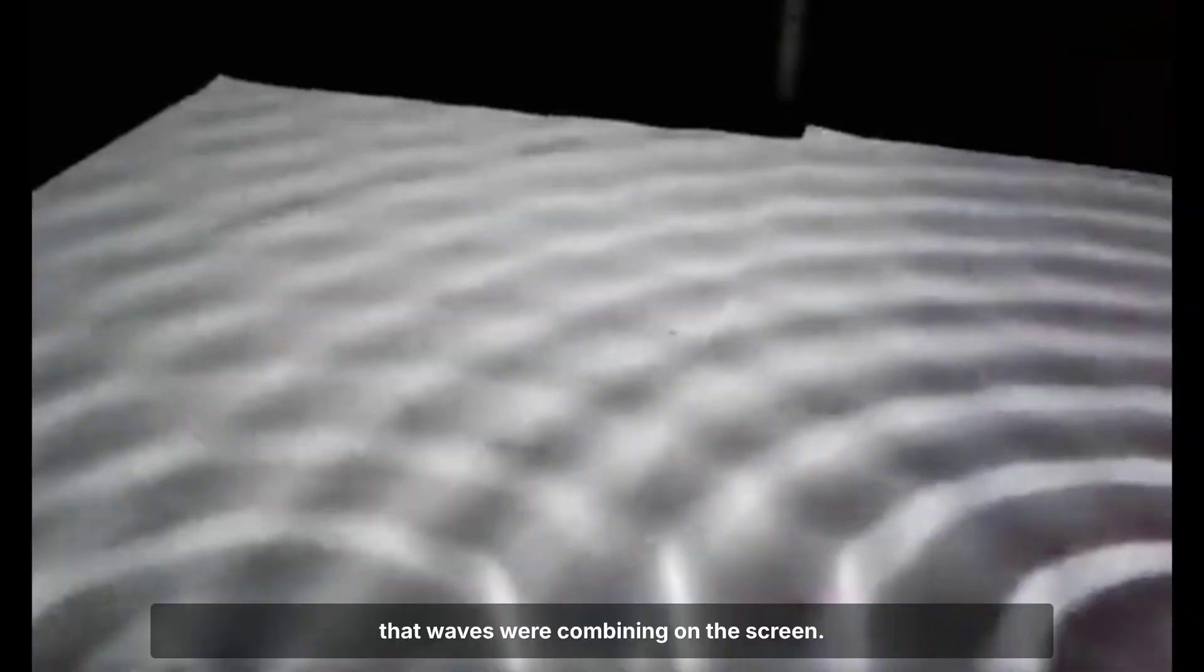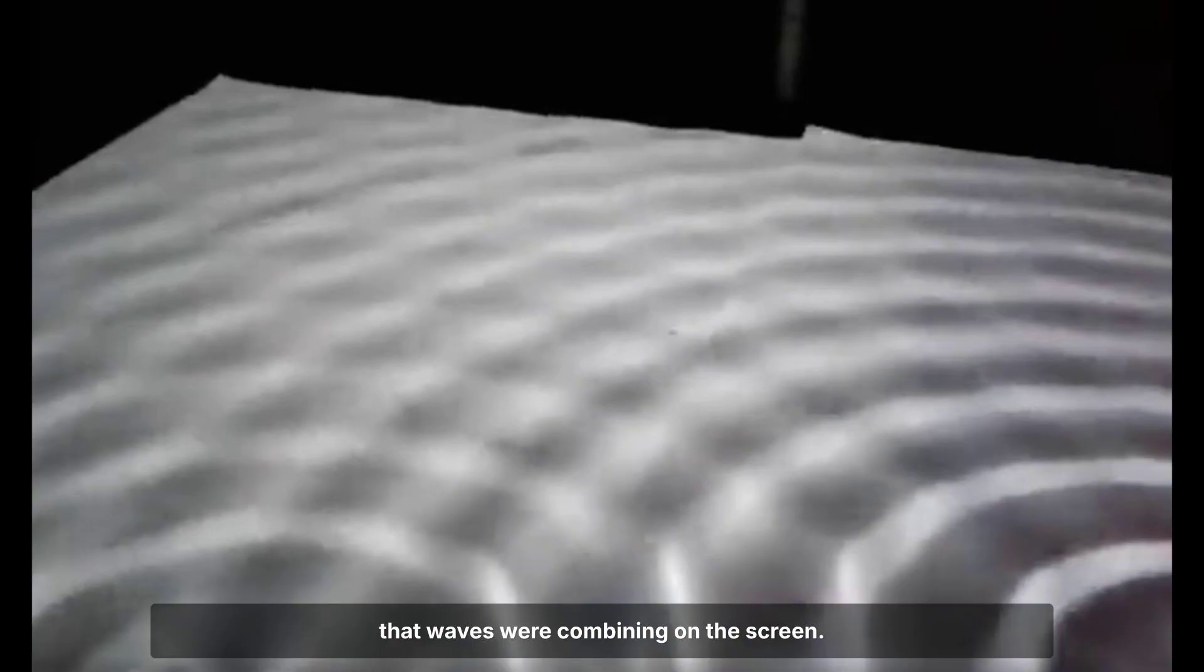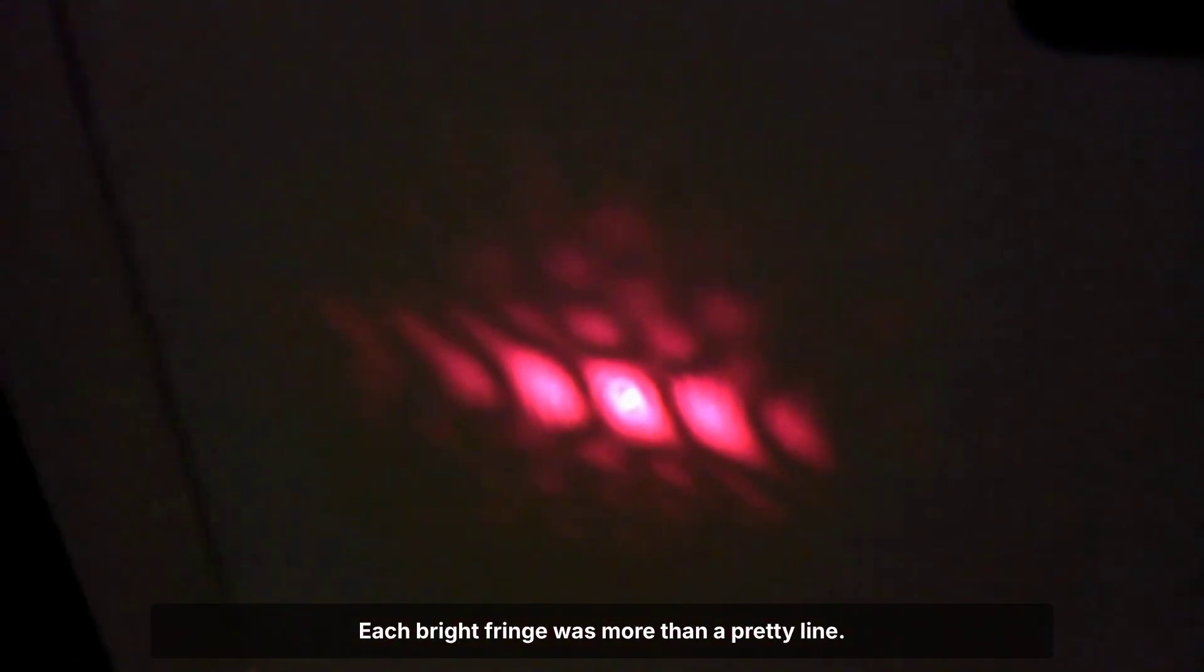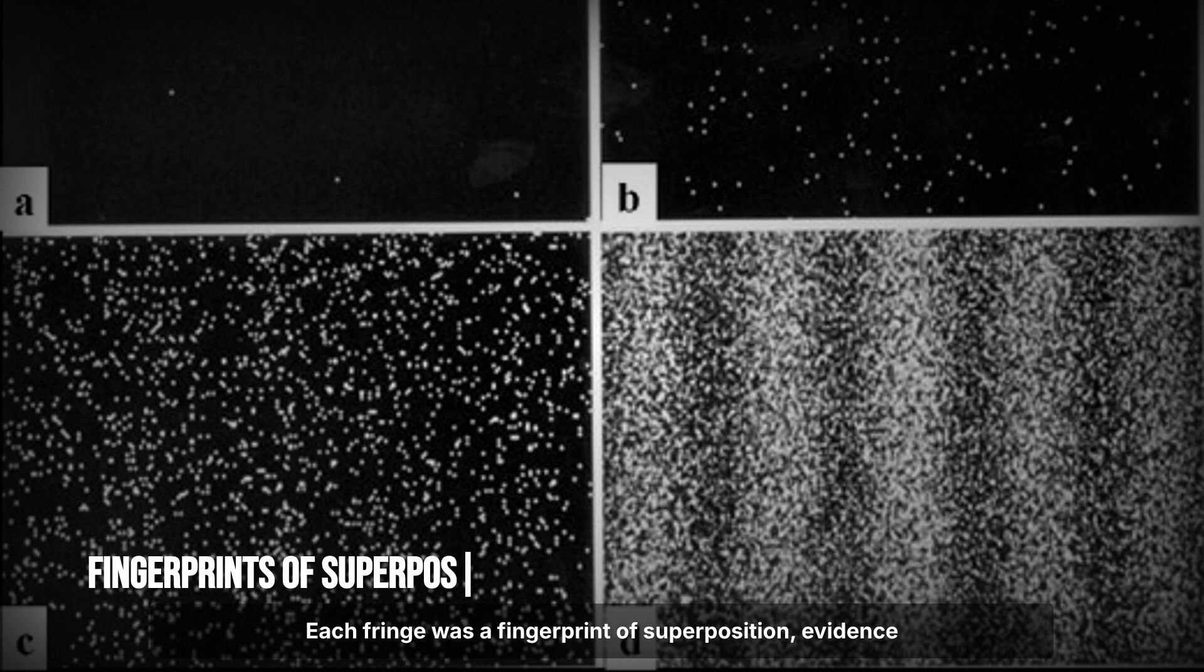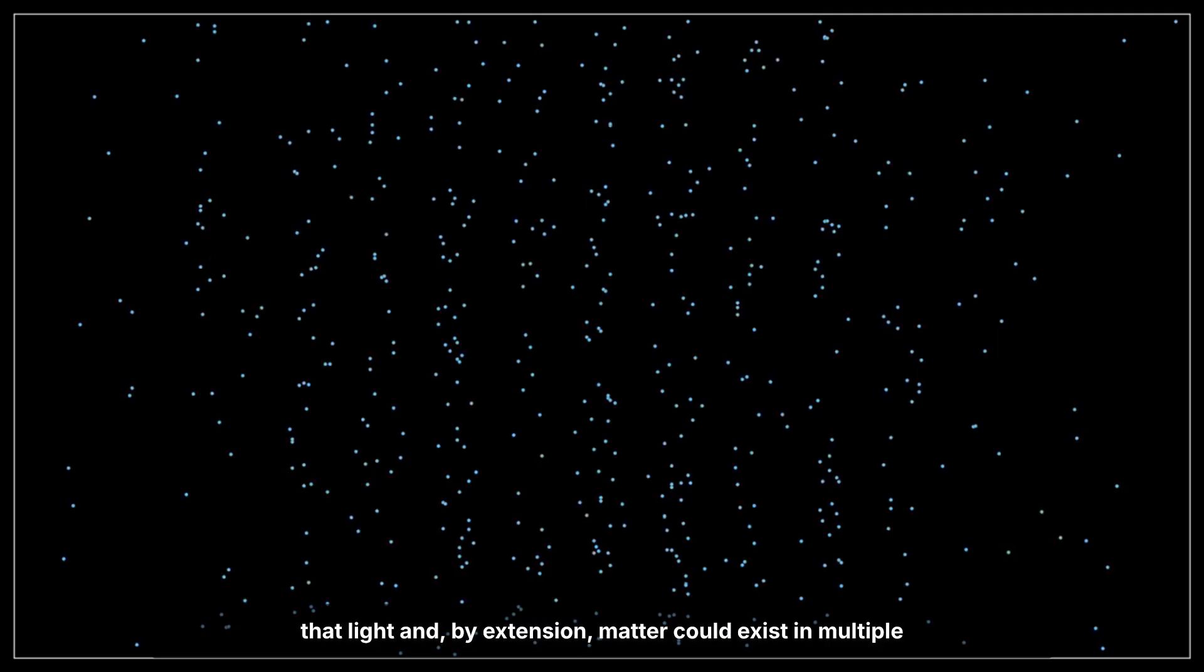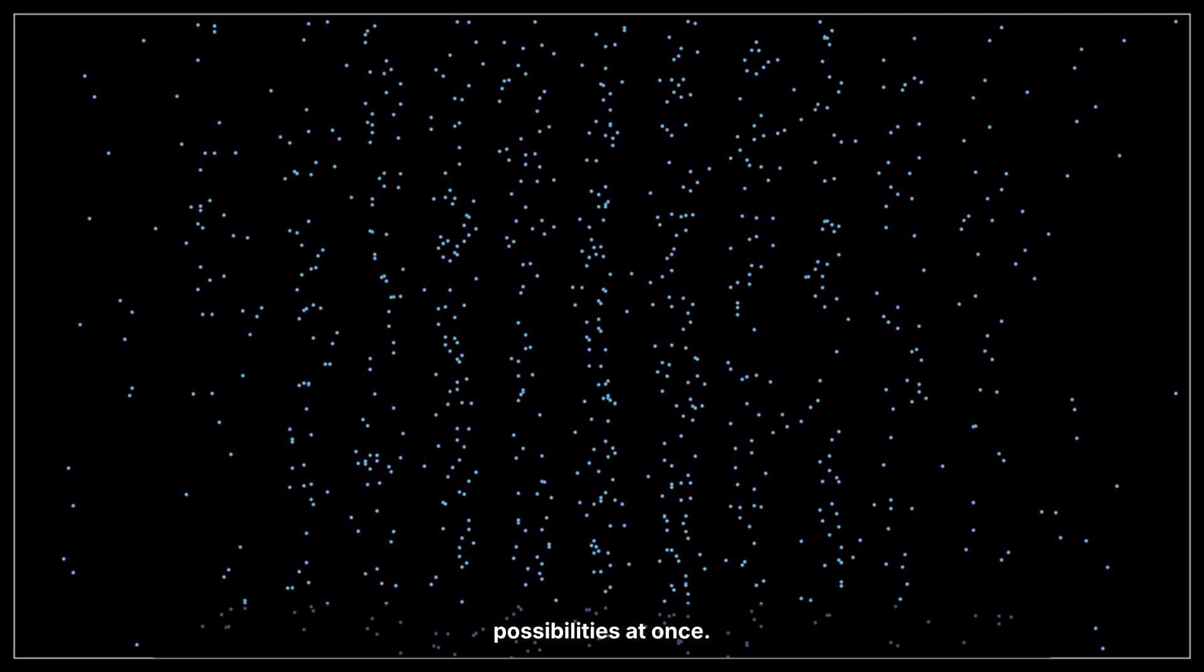A visible signature that waves were combining on the screen. Each bright fringe was more than a pretty line. Each fringe was a fingerprint of superposition, evidence that light and by extension matter could exist in multiple possibilities at once. The stripes proved that the smallest scales do not obey ordinary rules.